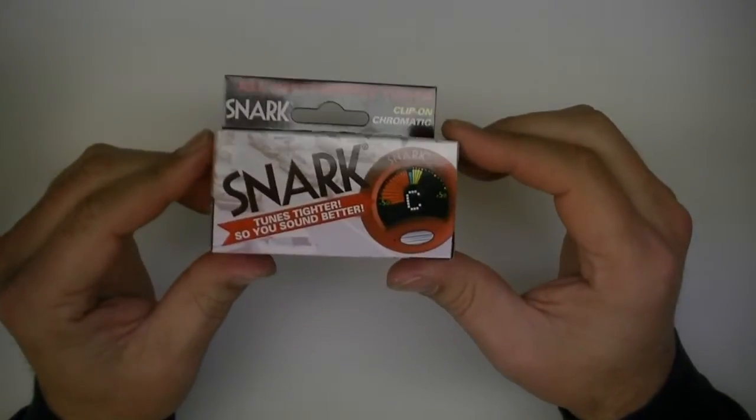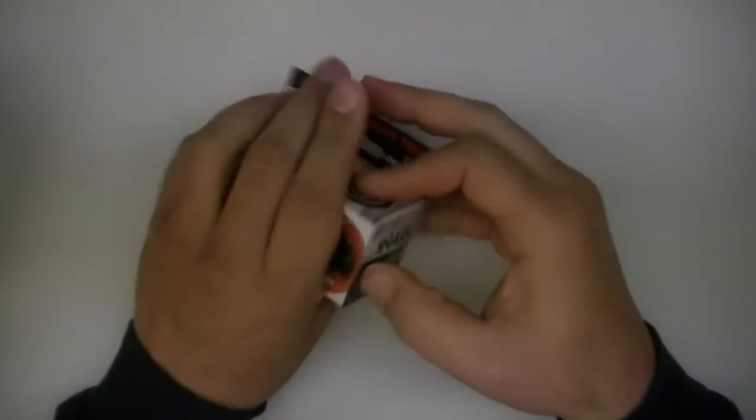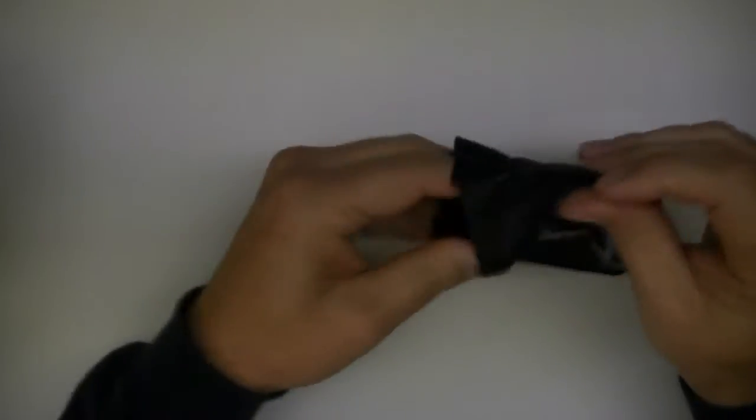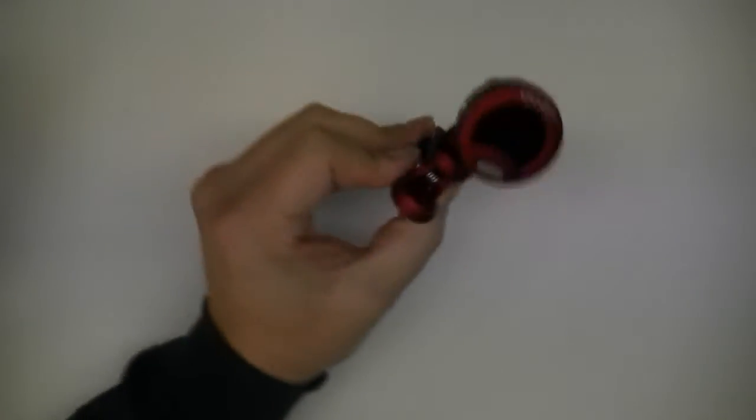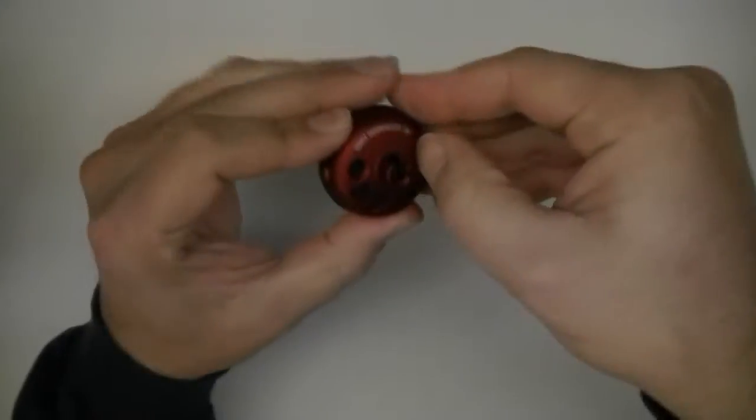This is a Snark SN2 chromatic tuner. It's a low-cost clip-on tuner typically used for a guitar, and in this video I'm going to show how you can make a simple mod to the tuner so that you can plug it into a standard 3.5 millimeter jack.